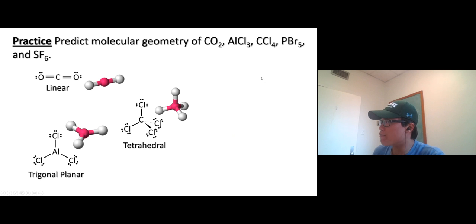PBr₅, right, phosphorus pentabromide. The best structure: so three bromines that are on the same plane look like a trigonal planar, and we got bromine pointing to the top and the bottom. All right, so we have the horizontal and vertical...